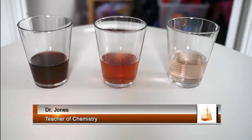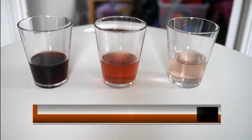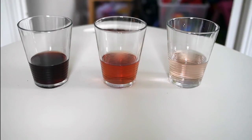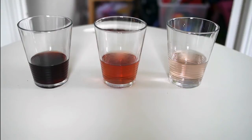Before you are three glasses of fruit juice. Each of them has approximately the same volume, which is about 100 millilitres. I'm sure you can tell me that the glass on the left hand side of the screen is the most concentrated — it has the most amount of fruit juice — and the one on the right has the least amount of fruit juice.